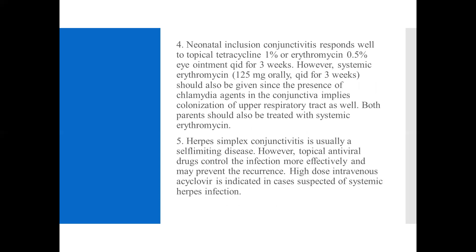Neonatal inclusion conjunctivitis responds well to topical tetracycline 1% or erythromycin 0.5% eye ointment four times daily for three weeks. However, systemic erythromycin 125 mg four times daily for three weeks should also be given, since the presence of chlamydial agents in the conjunctiva implies colonization of the upper respiratory tract as well. Both parents should also be treated with systemic erythromycin. Herpes simplex conjunctivitis is usually self-limiting. Topical antiviral drugs control the infection more effectively and may prevent recurrence. Intravenous acyclovir is indicated in cases suspected of systemic herpes infection.